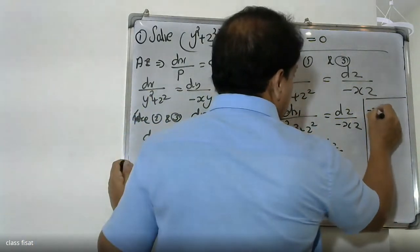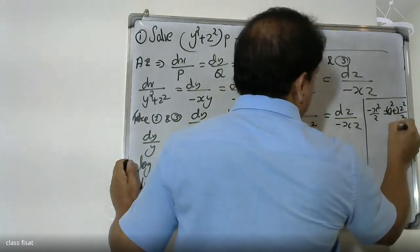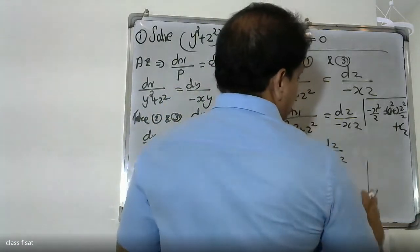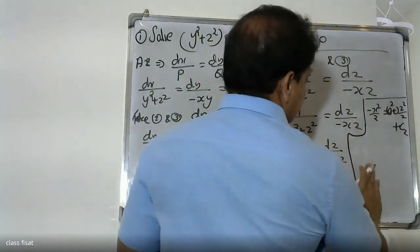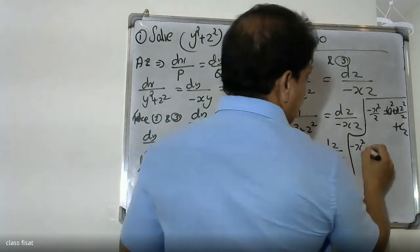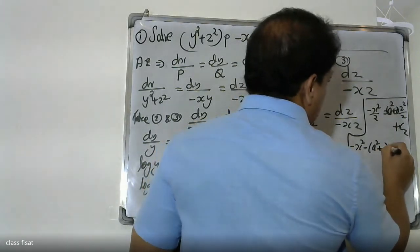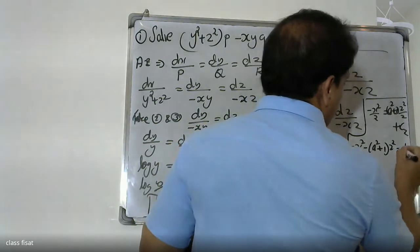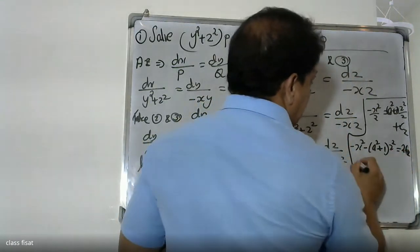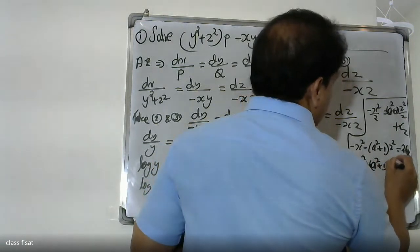Integrating both sides: minus x squared by 2 equals (s squared plus 1) into z squared by 2 plus constant c. Cross multiplying: minus x squared plus (s squared plus 1) times z squared equals 2c, which we call b. So x squared plus (s squared plus 1) times z squared equals b, the second constant.